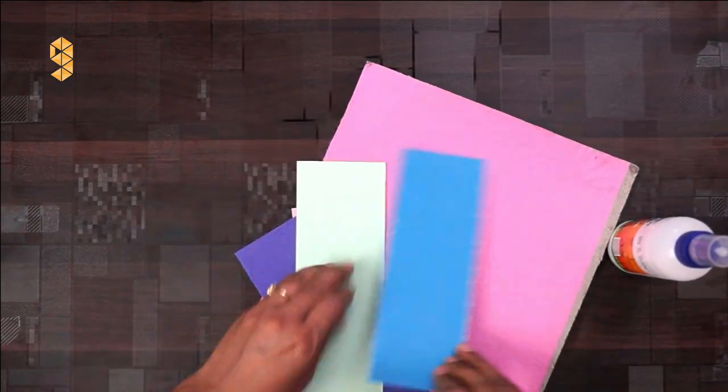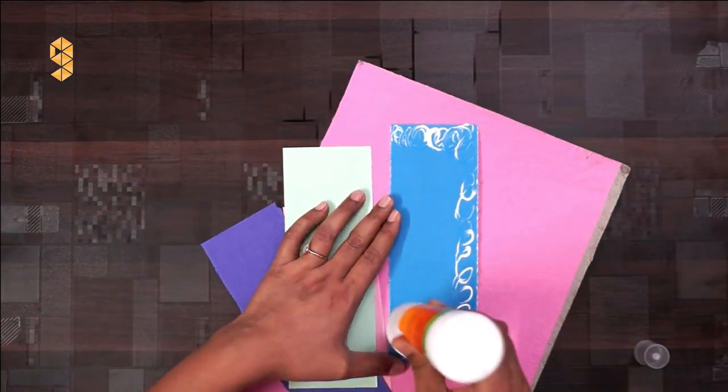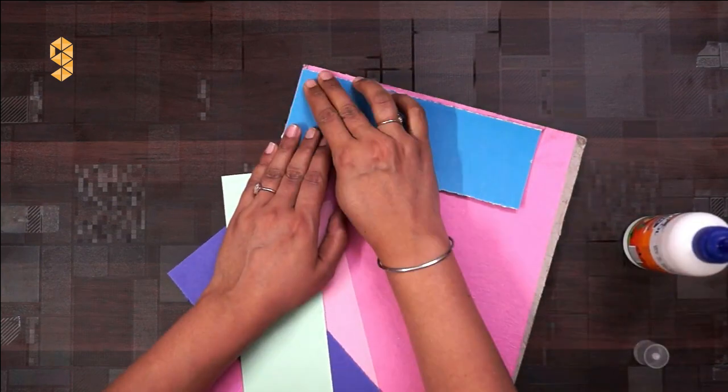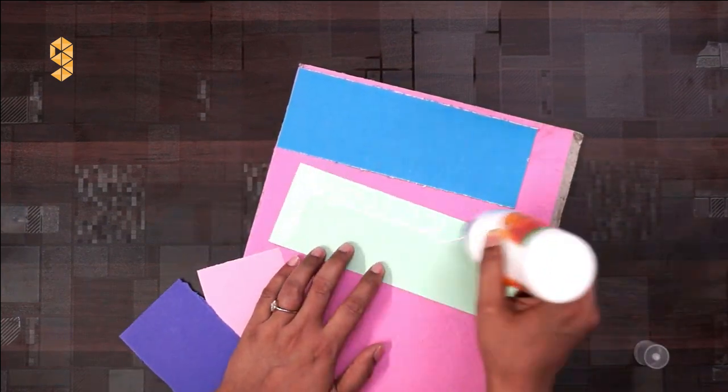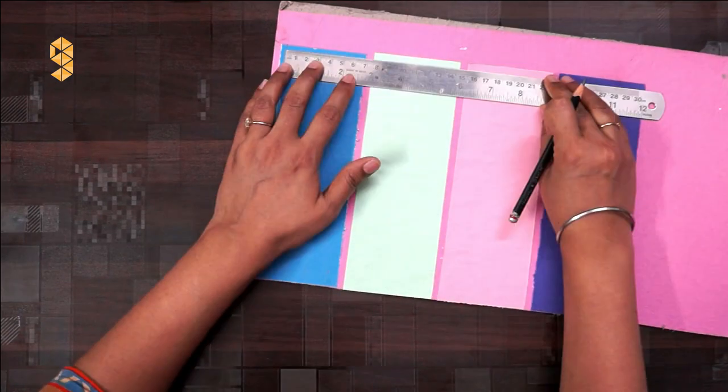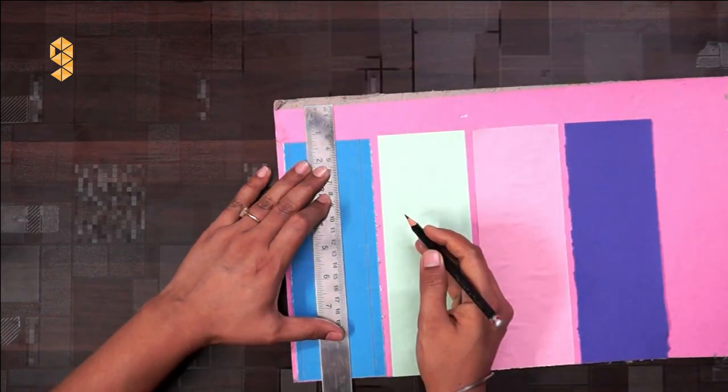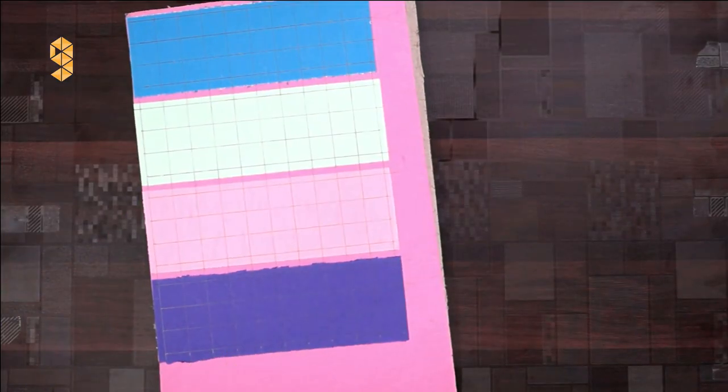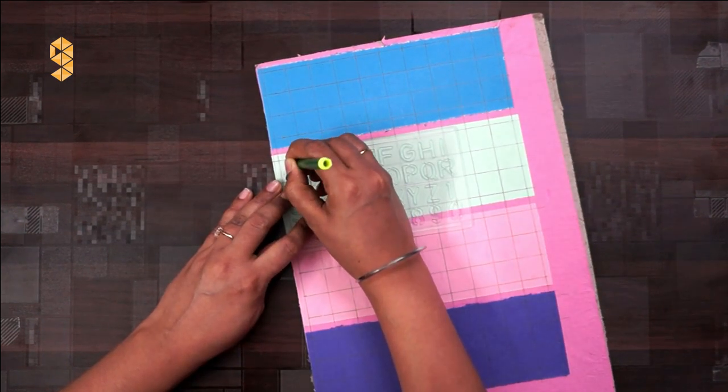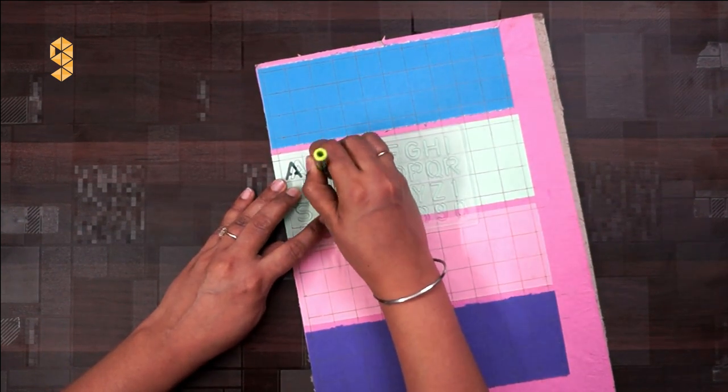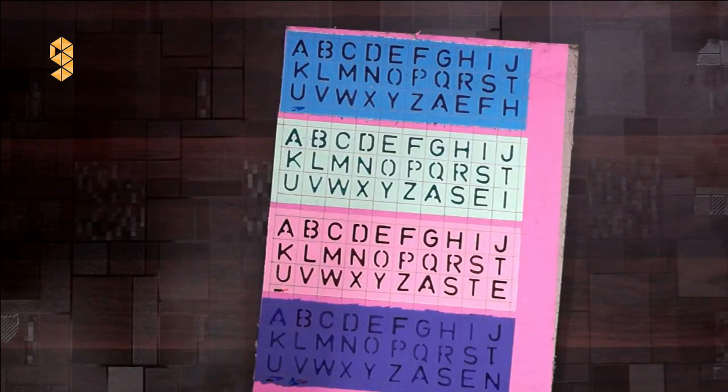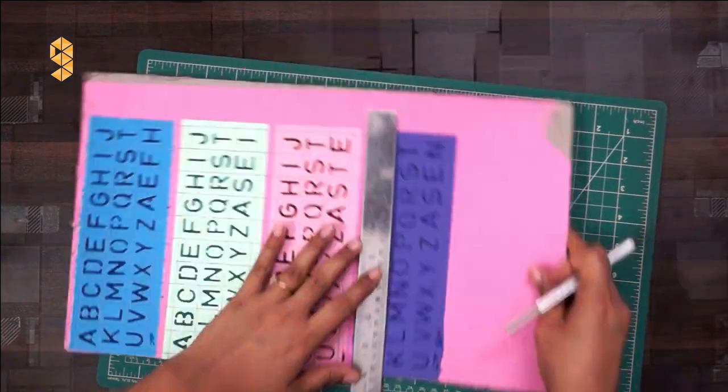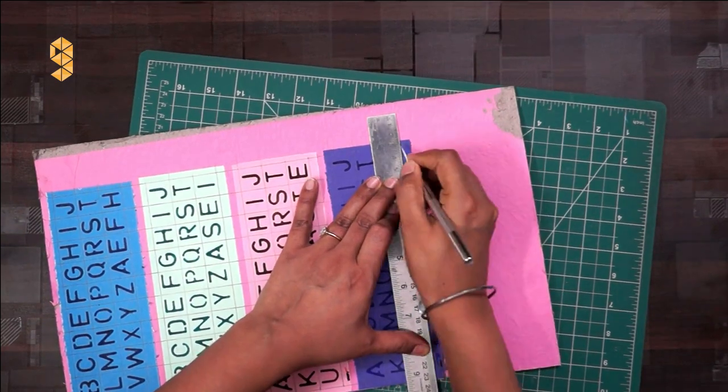For the alphabets, we will start with pasting multi-color sheets on a cardboard. Make a grid of 2 cm again, and using a stencil draw the letters from A to Z. Using either a cutter or scissors, cut all these alphabets.